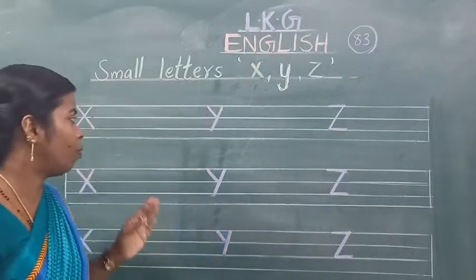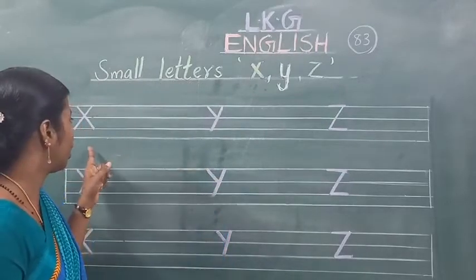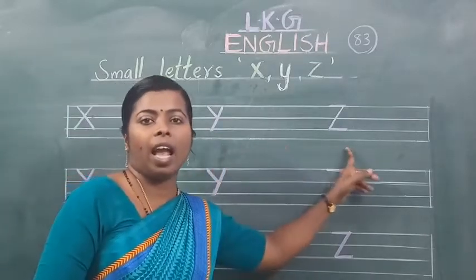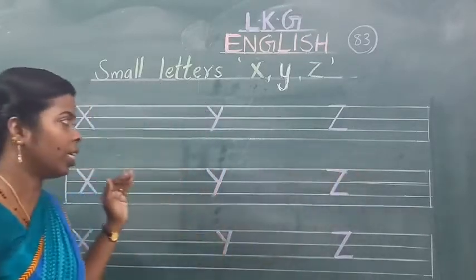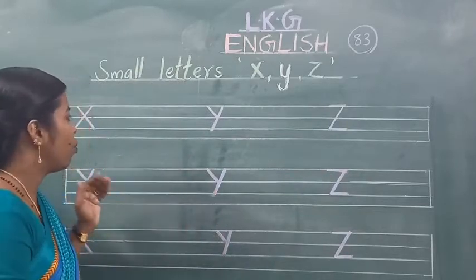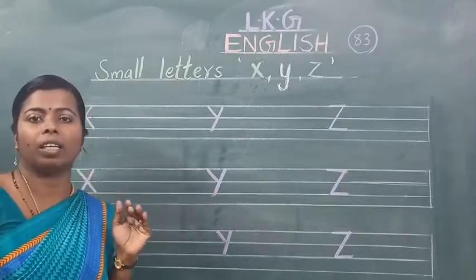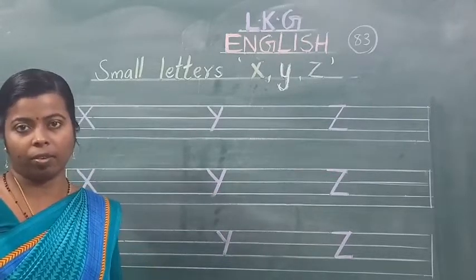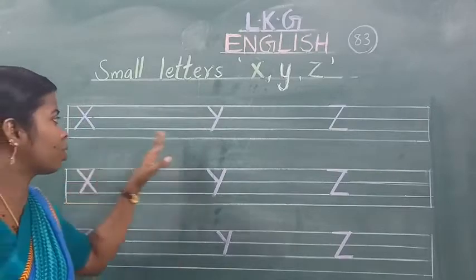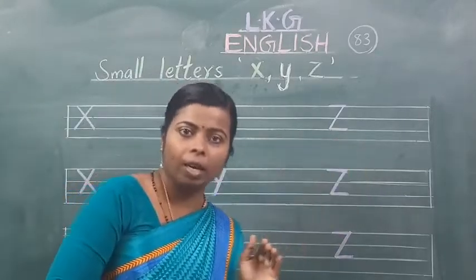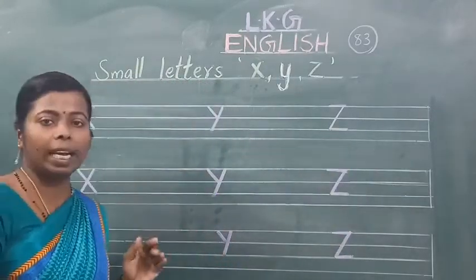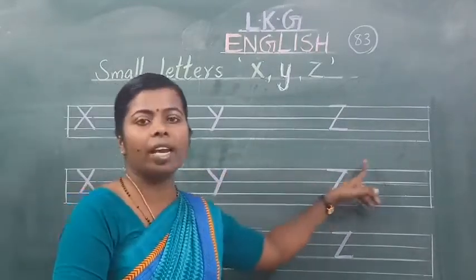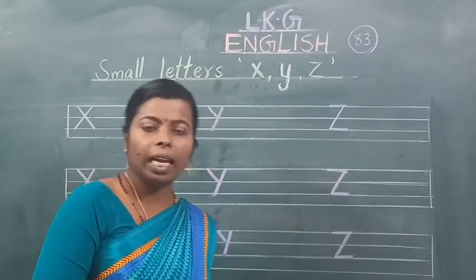All of you look here. Here capital letters X, Y and Z are given. And we have to write the small letters X, Y, Z. Capital letters X, Y, Z diya hua hai. Hamein kya likhna hai? Small letters X, Y and Z likhna hai. Let's start.